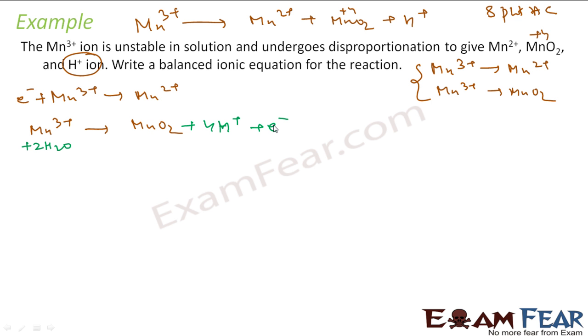Now if you see, this has 1 electron, this has 1 electron. If you just add these 2 equations, you should get the balanced equation. So if you see, there are 2 Mn here, this and this, you add, you get 2 Mn3+ electron cancel plus 2 water gives you Mn2+ plus MnO2 plus 4H+.